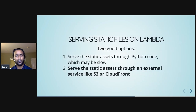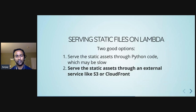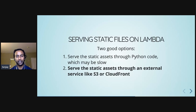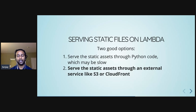That leaves us with two good options. The first is to serve static assets directly through the Python code — I've seen interesting libraries including one called White Noise that try to optimize your application for this use case. The other option is to use an external service like Amazon S3 or CloudFront for serving static assets. Either option should be fine, but I went with option two because it's clean, easy, and very performant. There are already lots of guides online for serving static files through S3, so I'll focus on a couple areas where I got tripped up.